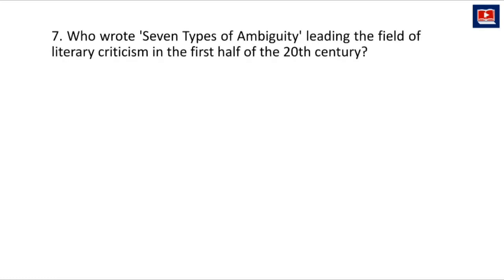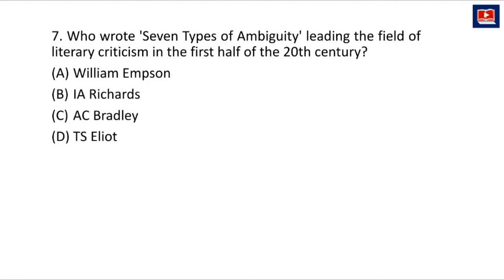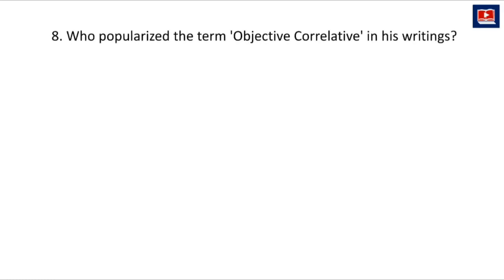The next question is: who wrote Seven Types of Ambiguity, leading the field of literary criticism in the first half of the 20th century? The options are William Empson, I.A. Richards, A.C. Bradley, or T.S. Eliot. The answer is William Empson. William Empson wrote this book Seven Types of Ambiguity, which is a very important work of 20th century literary criticism in English.